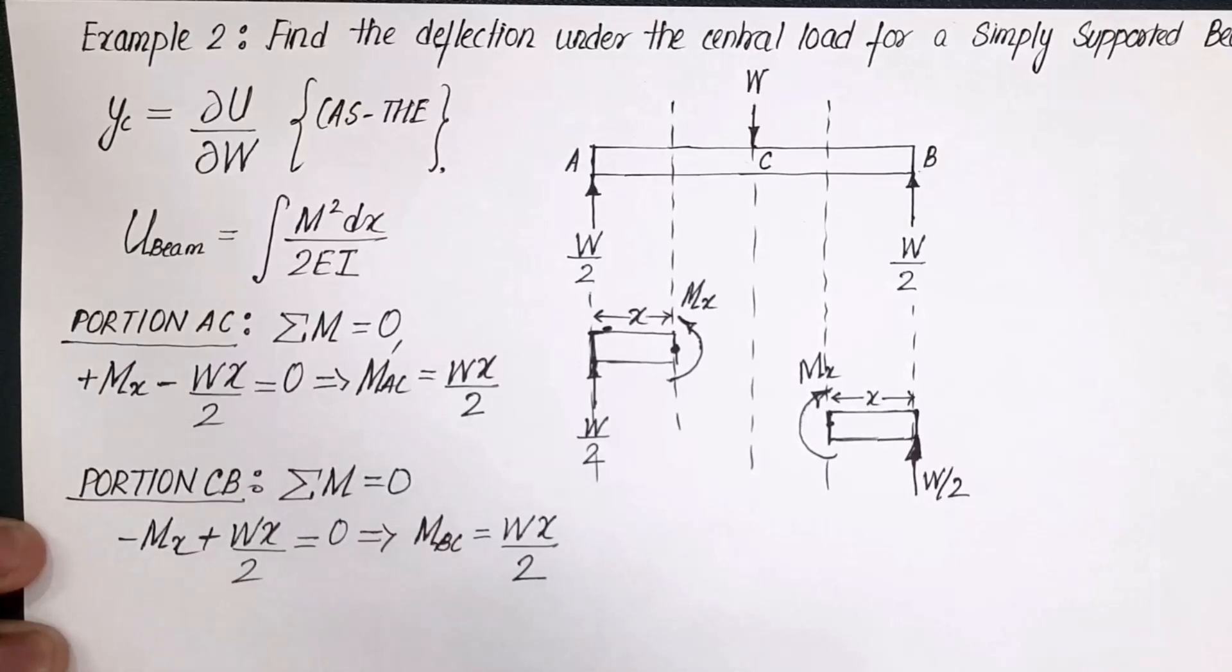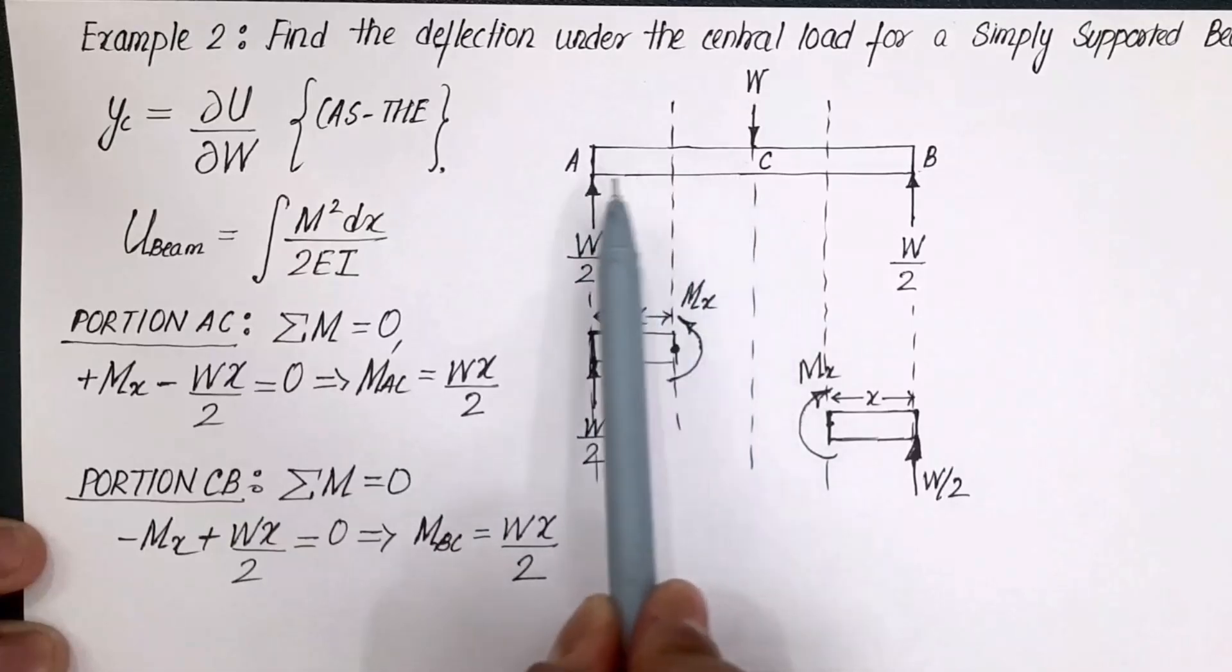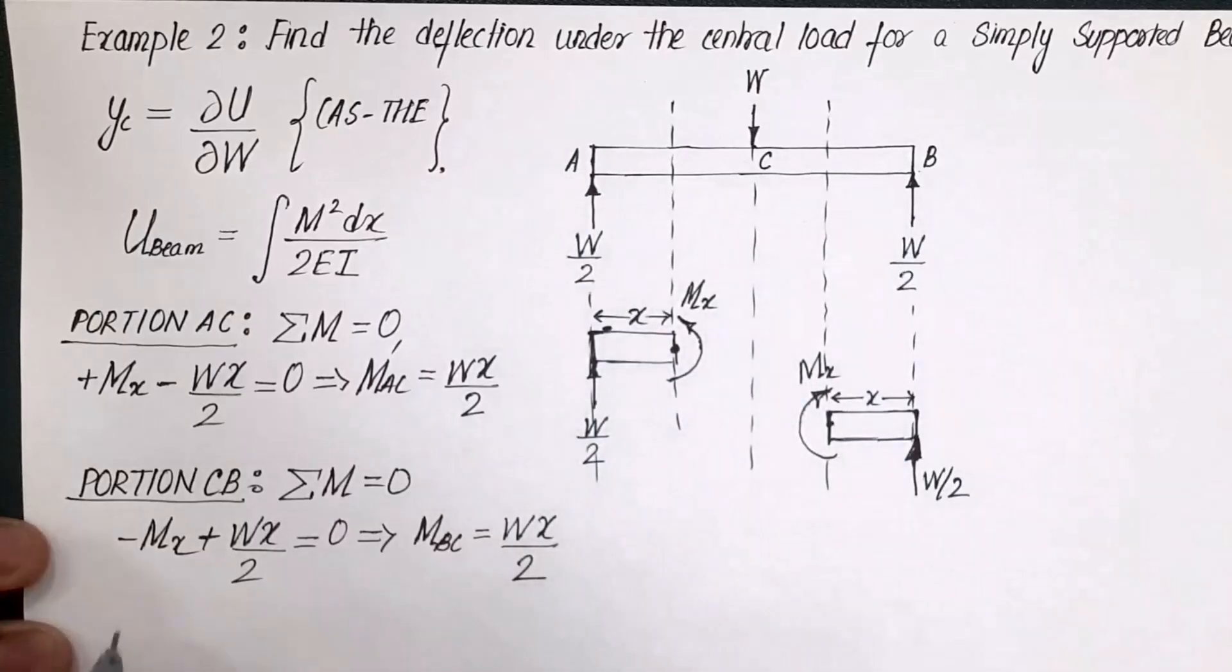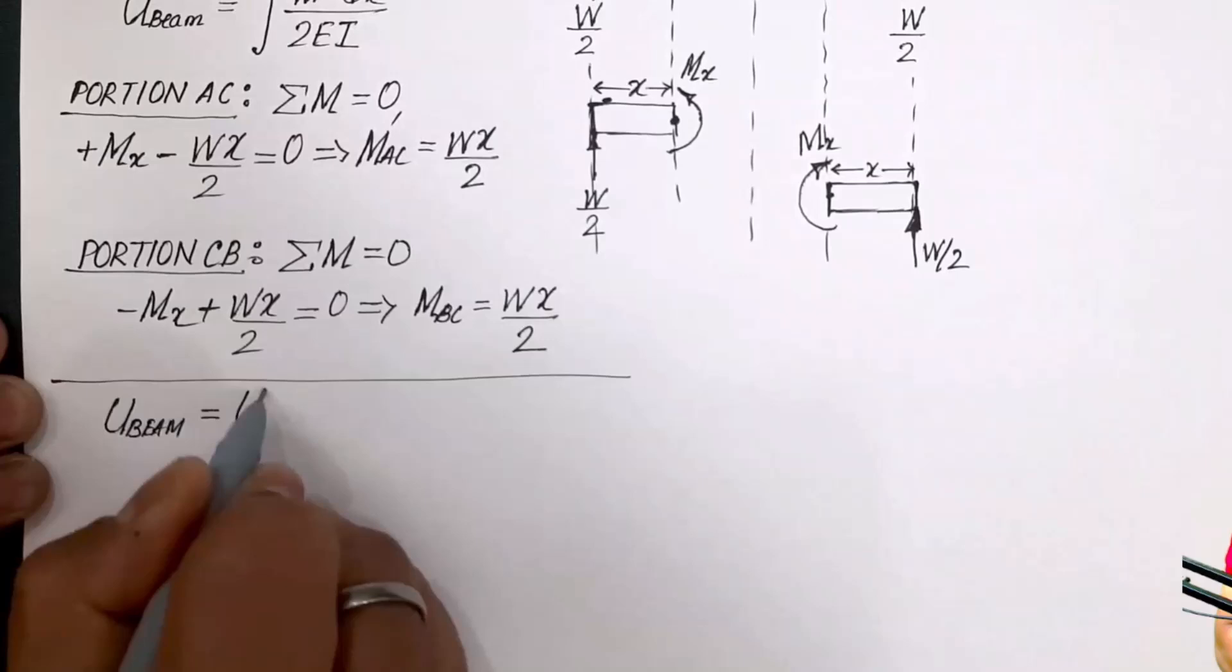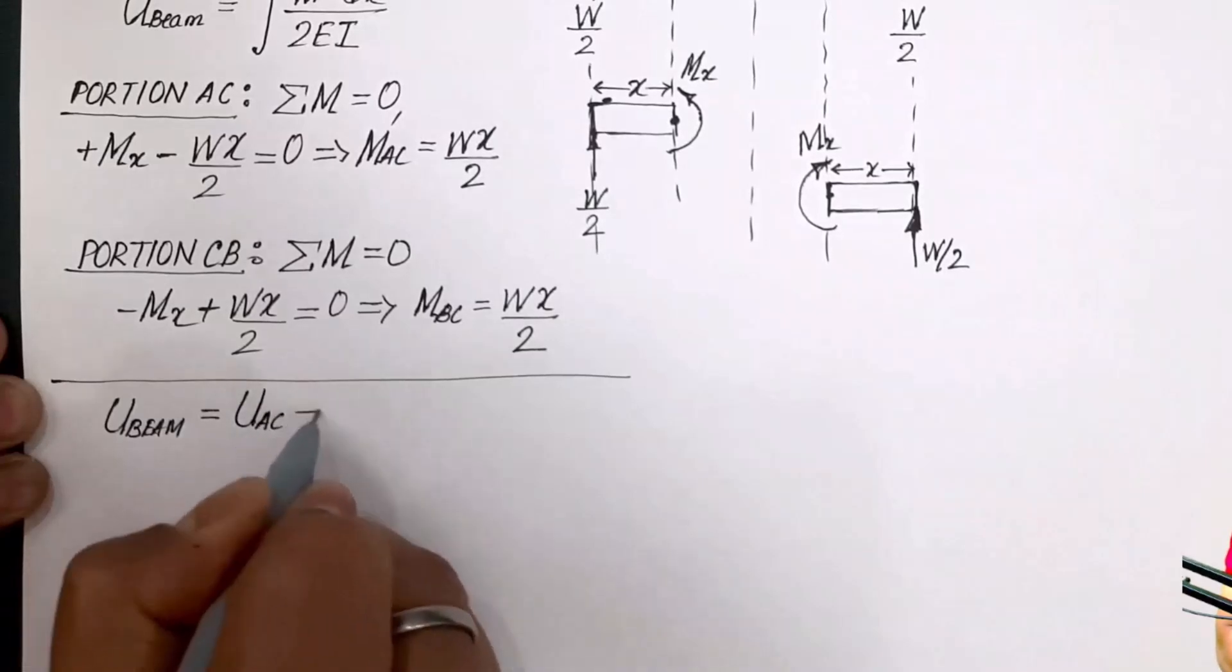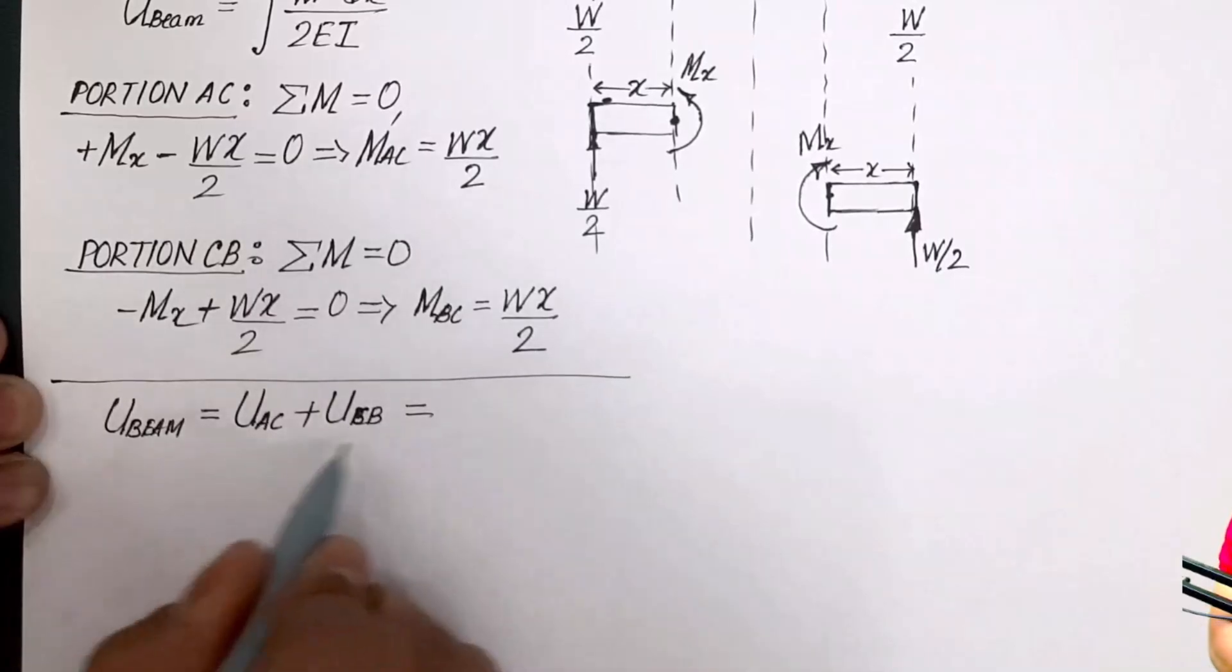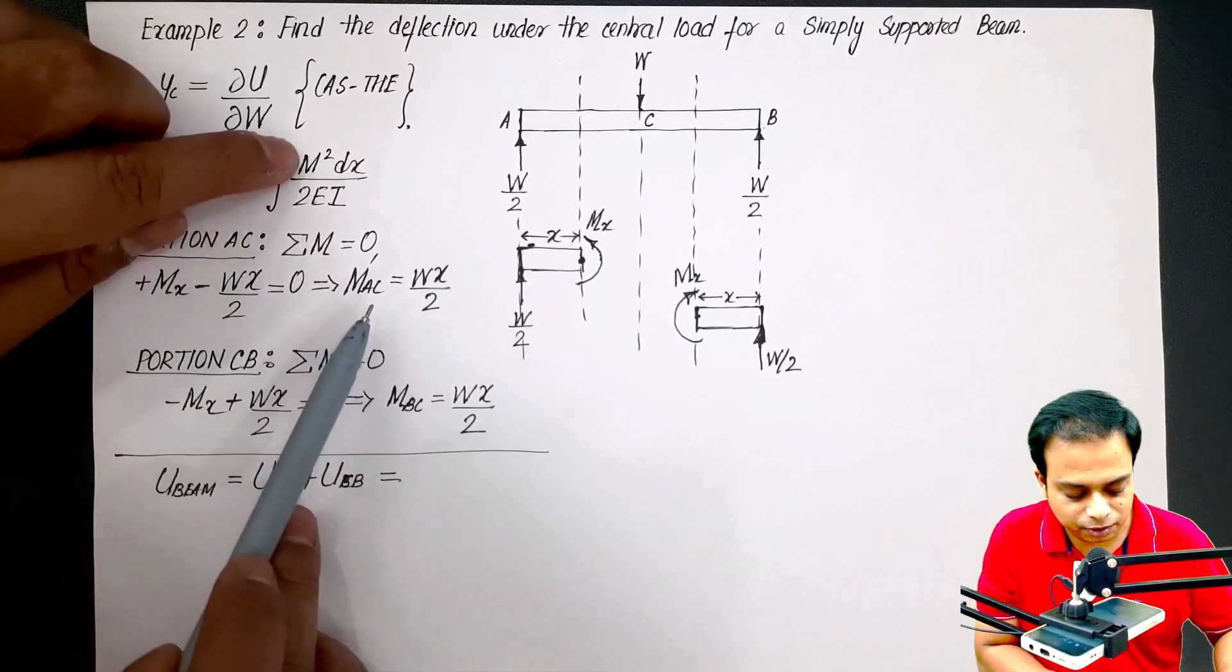So what we will do is, please listen, what we will do is we will simply calculate the strain energy for one portion and then we are going to double it to find the strain energy of the entire portion. What I essentially mean to say is this: here we go, strain energy of the beam can be written as the algebraic sum of strain energy of portion AC of the beam and strain energy of portion CB of the beam.